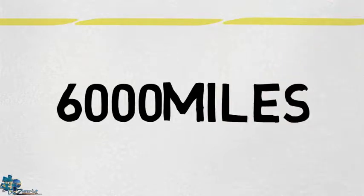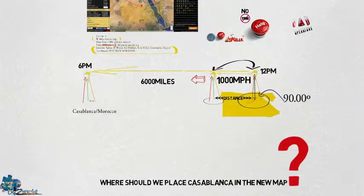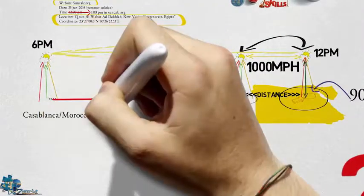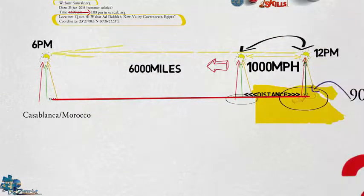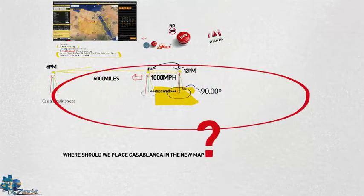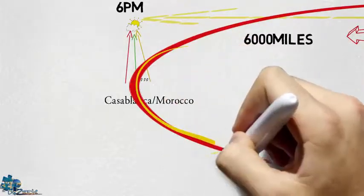And that also means that the distance between the two positions of the sun should be 6,000 miles. So of course we are not gonna draw a 6,000 miles line between these two positions, we will draw a circle with the radius of 6,000 miles.